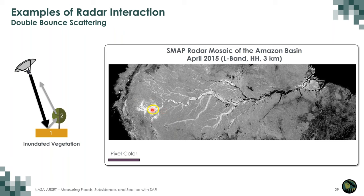Very bright patches in the mosaic indicate inundated vegetation. At L-band, the radar can penetrate through tree cover to the surface. If that surface is water, strong forward scattering off the water bounces off neighboring tree stems and returns to the radar — a very strong double bounce effect. These bright inundated vegetation features can be used to understand the extent of flooding under tree canopies, a capability much more accessible at L-band than at C-band.